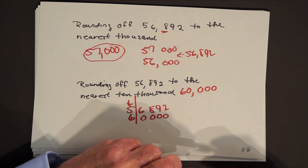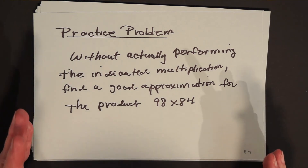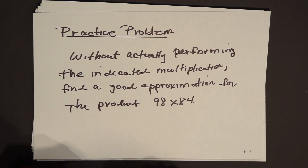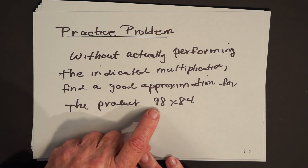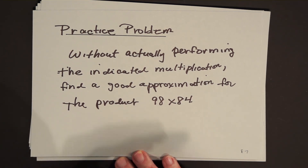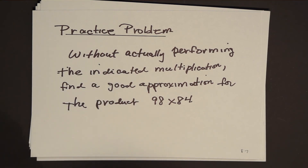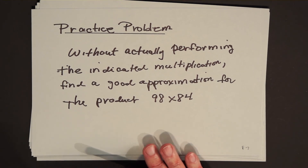We're running towards the end of our lecture time, so it's time for our practice problem. Pause your video on the problem, work it out, then come back and see our solution. The problem says: without actually performing the indicated multiplication, find a good approximation for the product 98 times 84. Note that the phrase 'good approximation' is somewhat subjective — what's good for one might not be for another — so there could be more than one acceptable answer.